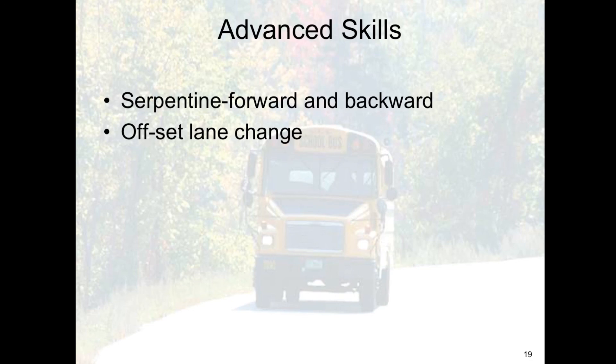Offset lane change: this is set up typically at the end of the serpentine if possible. It simulates a very tight lane change like what you may have to do to work around parked cars on a street of a subdivision. Right and left evasive drill: this should be done on a closed course. You begin by accelerating to 20 miles an hour and then at the trainer's command, you move to the right or the left around an object. This is a braking and steering exercise — do not brake while you're inside a turn.